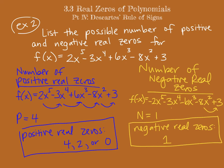We can think about this from a Fundamental Theorem of Algebra point of view: this is a quintic polynomial, so it has five total roots. All five could be real — in that case, four would be positive and one negative. Or three could be real and two imaginary. Or only one could be real and four imaginary. In that last case, that real root would be the one negative real root. We know we have to have one negative real root.